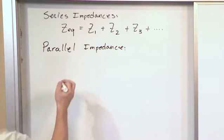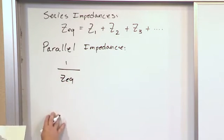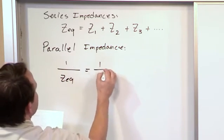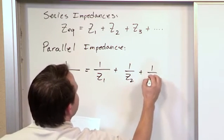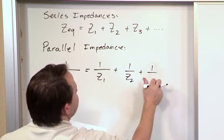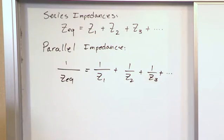you might guess that one over the equivalent impedance is equal to one over the first impedance plus one over the second impedance plus one over the third impedance, Z sub 3, and so on. This is exactly what it was for resistors.